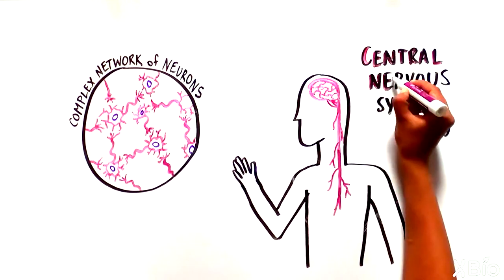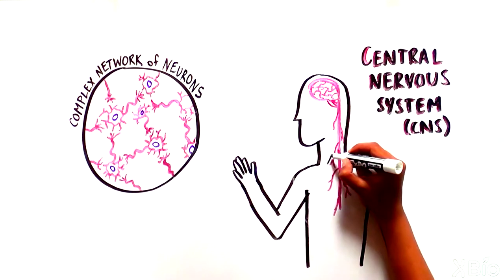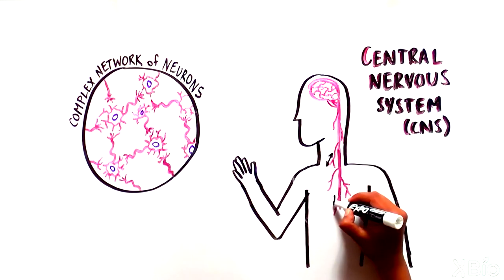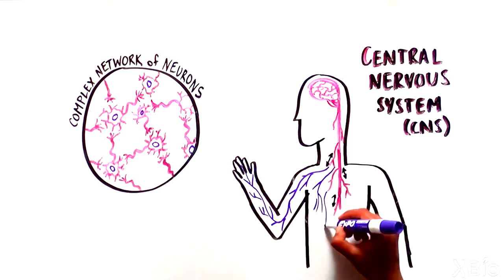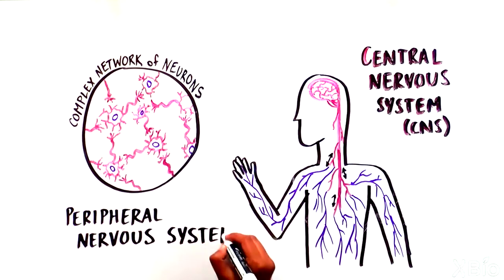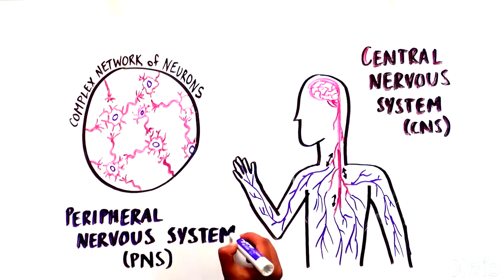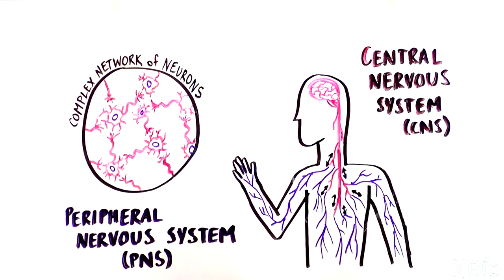The CNS is responsible for both sending information from and processing information sent back to the brain. All of the neurons outside of the central nervous system make up the peripheral nervous system, which is responsible for carrying out commands from the CNS, as well as sending information from the rest of the body and the environment to the CNS.